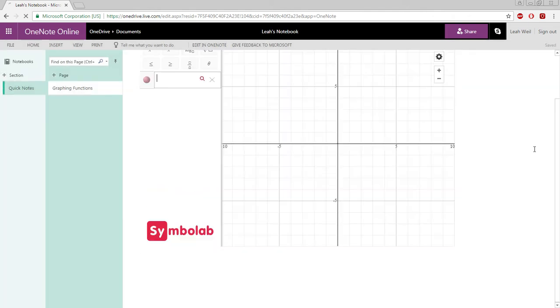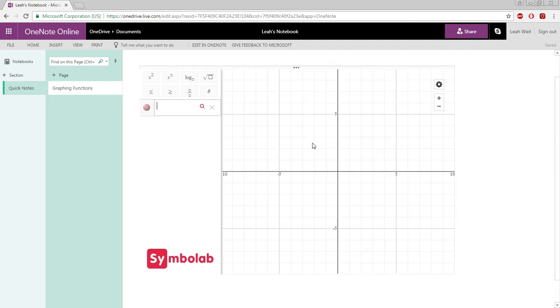And now we have the Symbolab graphing calculator. You can graph any function you'd like using the scientific pad above if needed. So we'll go ahead and type in some functions.